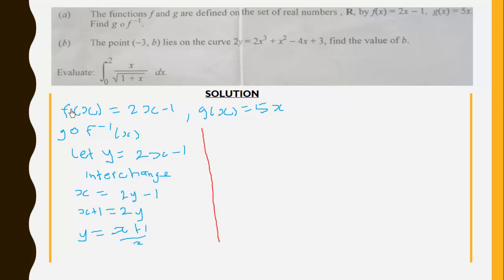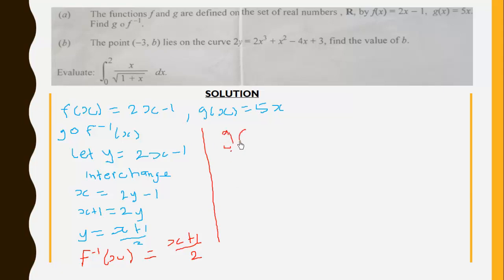This means f⁻¹(x) = (x + 1)/2. Now to find g∘f⁻¹(x), which is the same as g(f⁻¹(x)), the function g(x) = 5x will operate on the inverse function, replacing x with (x + 1)/2. So g∘f⁻¹(x) = 5 × (x + 1)/2.